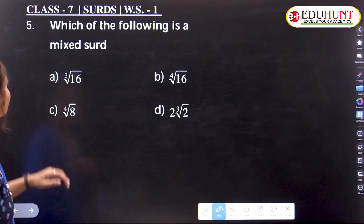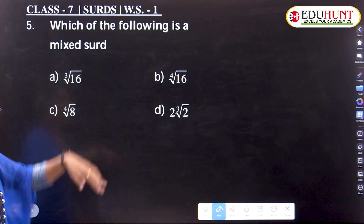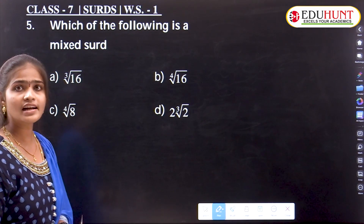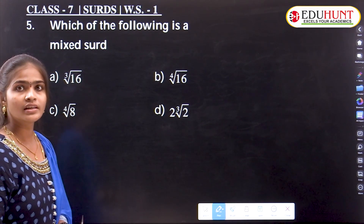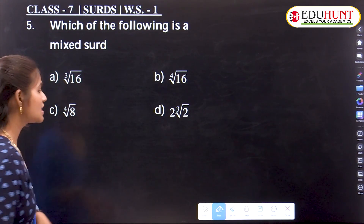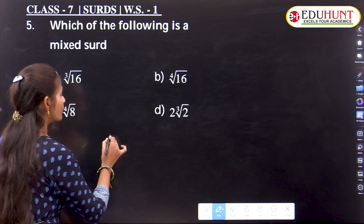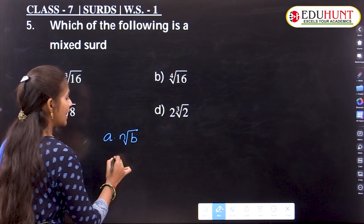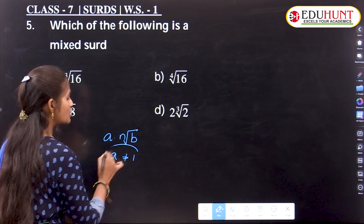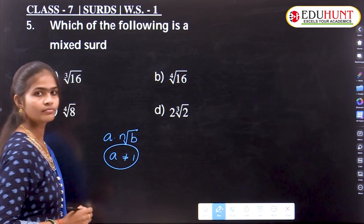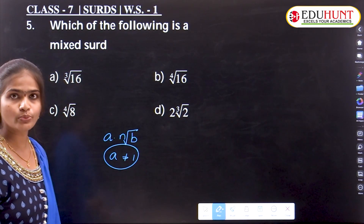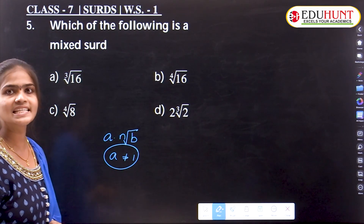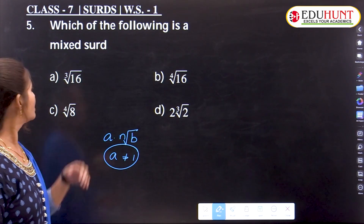Children, the next problem asks: which of the following is a mixed surd? A mixed surd is in the form a·ⁿ√b, where a should not be equal to 1. If a is not equal to 1, then we call that surd a mixed surd.